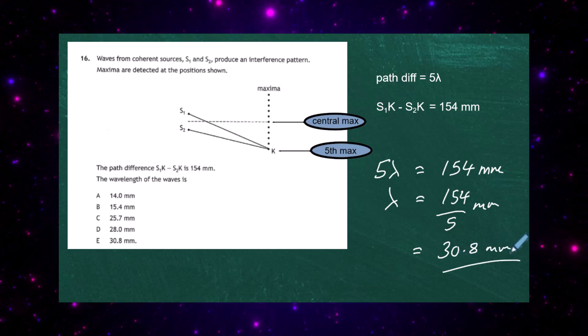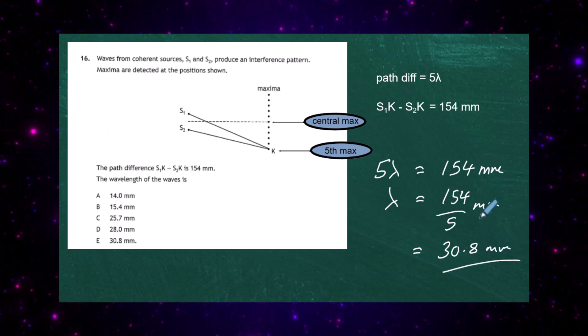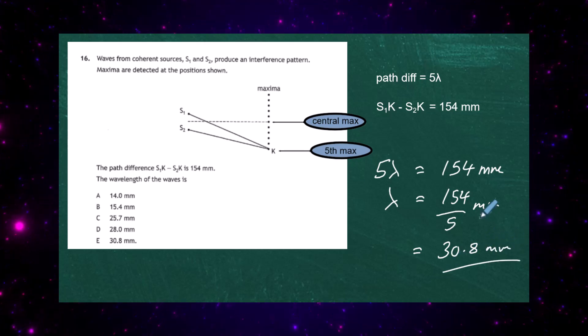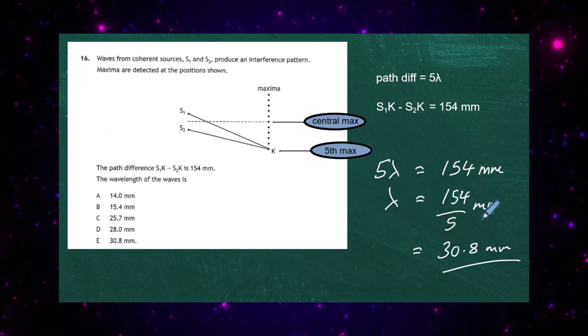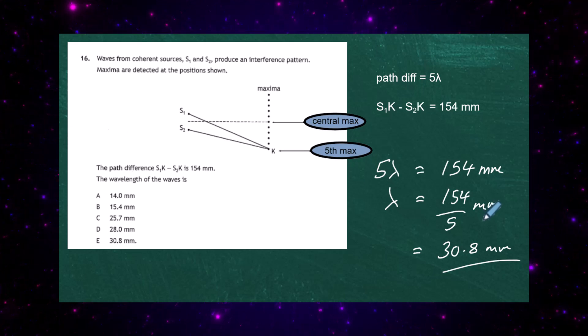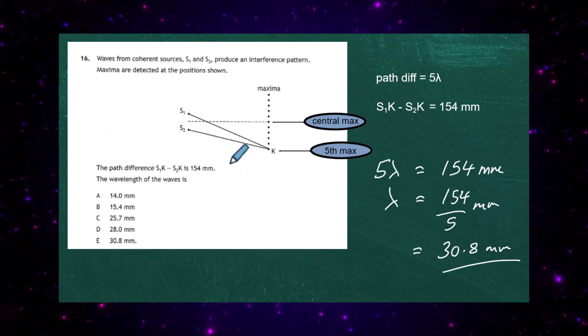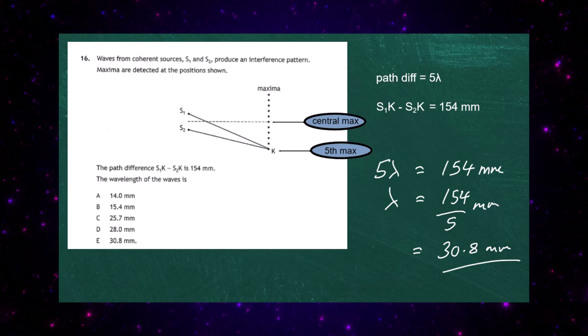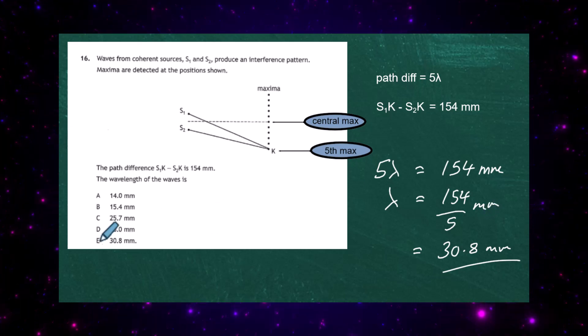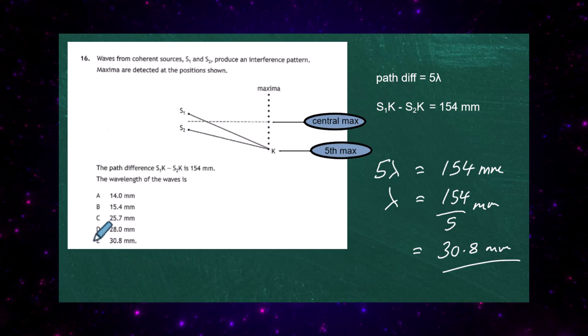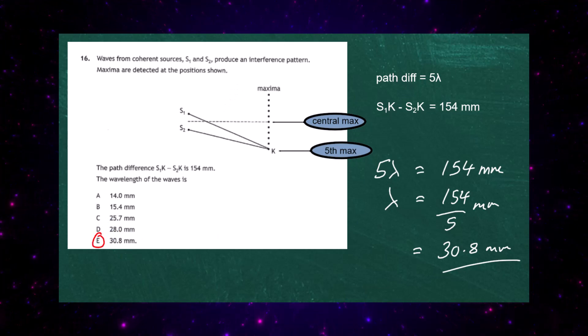So the wavelength of that light is in fact going to be 30.8mm, and the answer for that is going to be letter E.